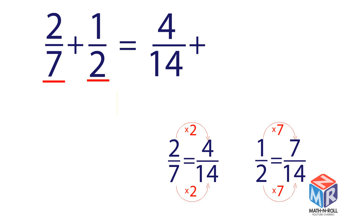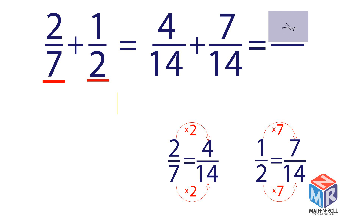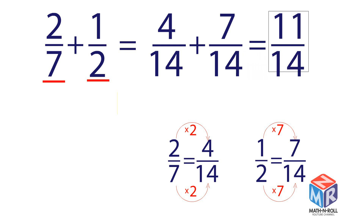The equivalent fraction of 1 half is 7 over 14. Then add 4 fourteenths and 7 fourteenths. Add the numerators and keep the denominator the same. The answer is 11 fourteenths.